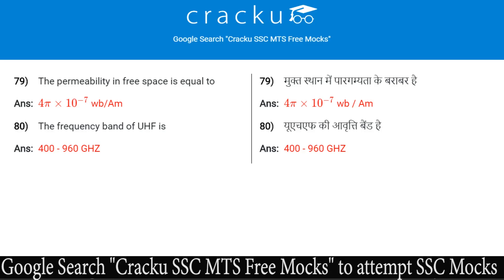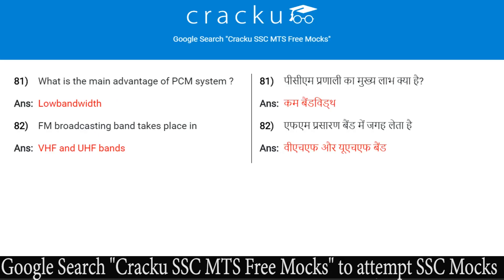The frequency band of ultra high frequency is 400 to 960 gigahertz. What is the main advantage of PCM system? The answer is low bandwidth. FM broadcasting takes place in the very high frequency and ultra high frequency bands.